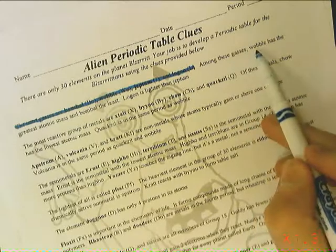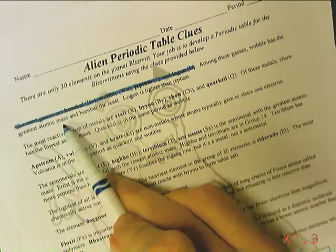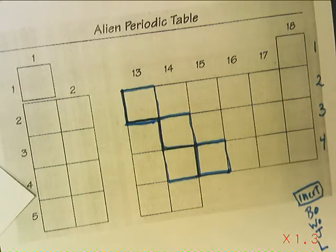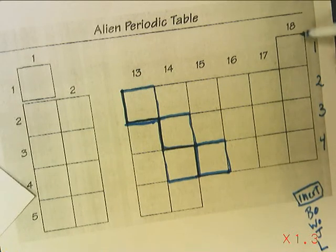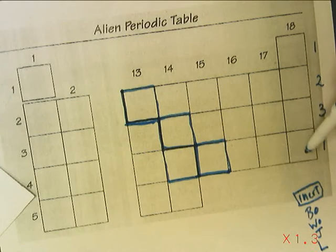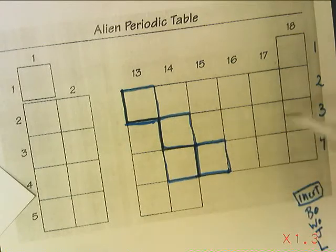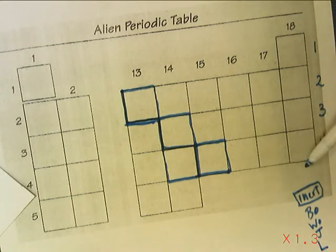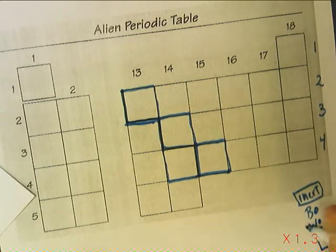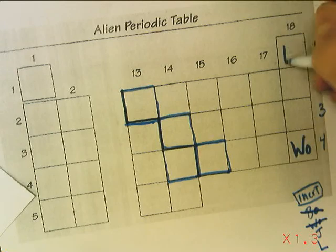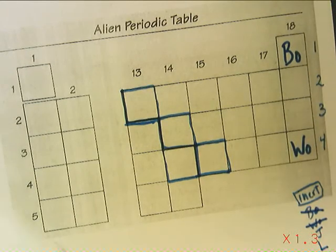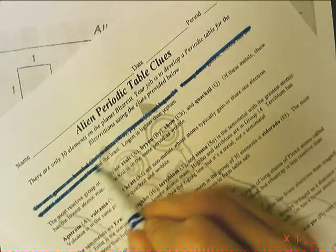Among these gases, WOBBLE has the greatest atomic mass and BOMBAL the least. I know that elements get heavier as you go down. It said WOBBLE has the greatest atomic mass. I'm going to put it in, and then it tells me that BOMBAL has the least. BOMBAL goes there.